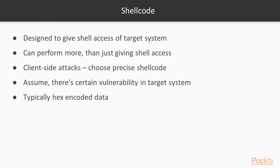Let's break the word shellcode into shell and code. In simple terms, a shellcode is a code that is designed to give shell access to the target system. Practically, a shellcode can do a lot more than just giving shell access — it all depends on what actions are defined in the shellcode. For executing client-side attacks, we need to choose the precise shellcode that will be part of our payload. A shellcode is typically hex-encoded data and may look like this.